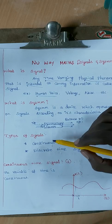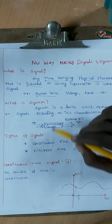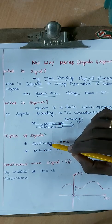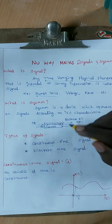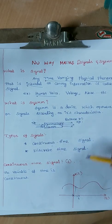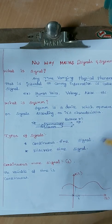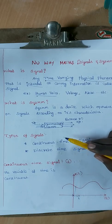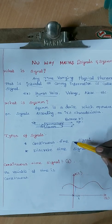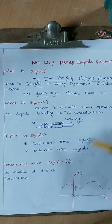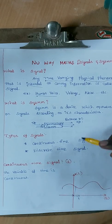Now let's talk about types of signals. The basic types are: Continuous Time and Discrete Time. There are also Energy signals, Power signals, and so on — those will be covered in future videos.